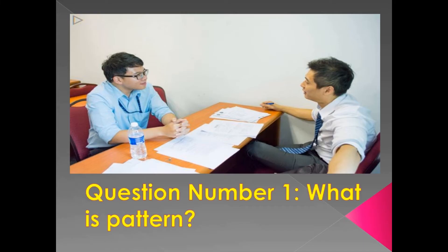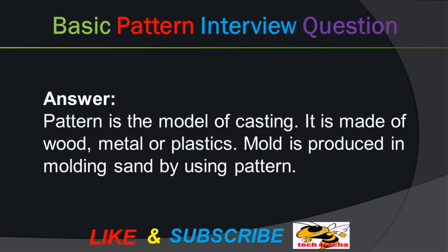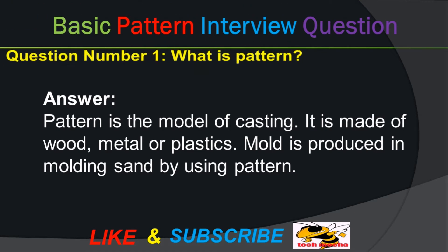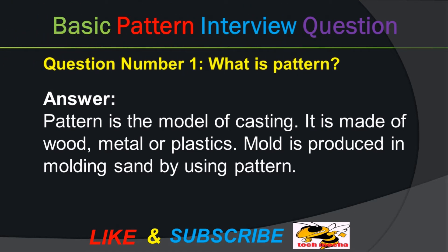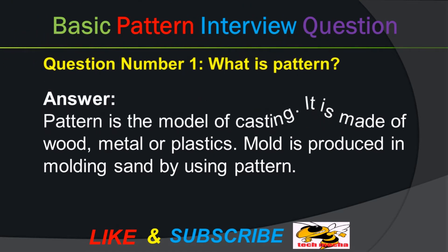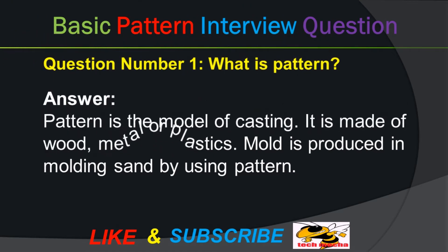Question number one: What is pattern? Answer: Pattern is the model of casting. It is made of wood, metal, or plastics. Mold is produced in molding sand by using a pattern.